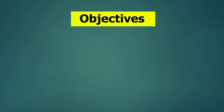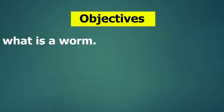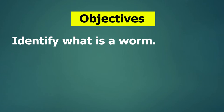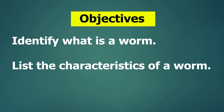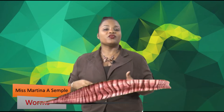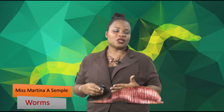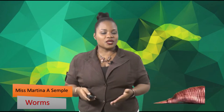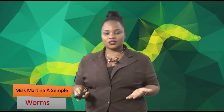At the end of this lesson, our objective is to identify what is a worm and list the characteristics of worms. We have to pay attention because in the midst of our lessons, from time to time, we would have questions that we would have to answer. So take out your notebooks, take out your pencil, put on your listening ears. Let's get started for today.